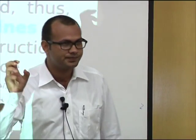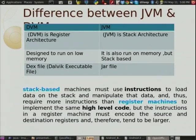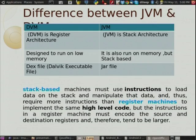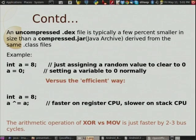When we are fetching one instruction — suppose I want to copy one value to a variable — how many cycles do we require? The instruction in a register machine must encode the source and destination register and therefore tends to be larger. The uncompressed .dex file is typically a few percent smaller in size than a compressed .jar file. Uncompressed DEX is lesser than compressed JAR.